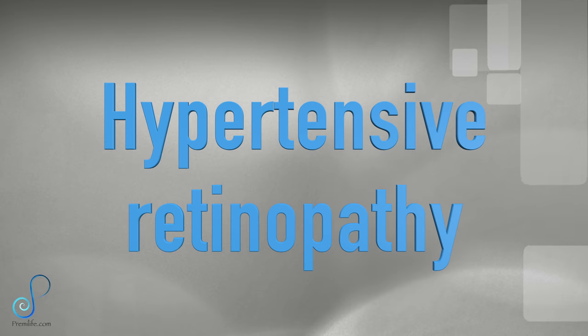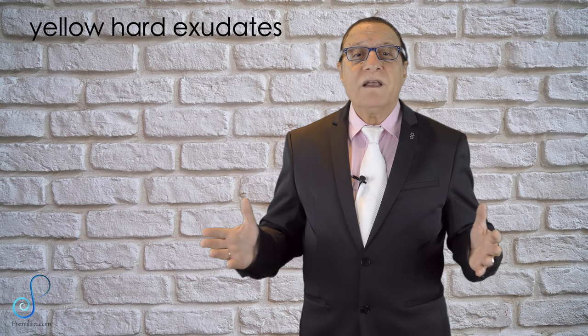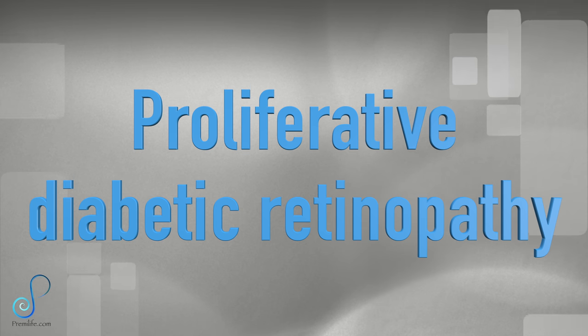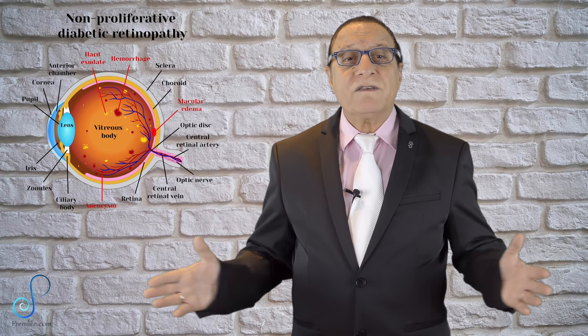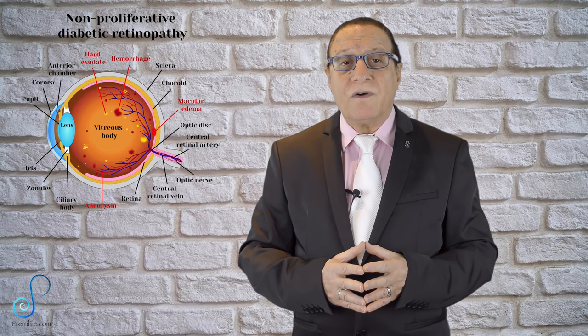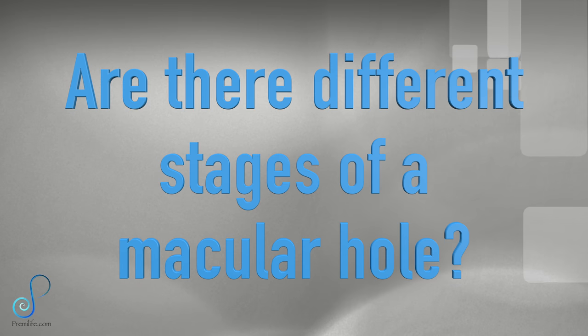Hypertensive retinopathy involves retinal vascular damage triggered by hypertension. Symptoms normally show late in the disease. Fundoscopic examination reveals arteriolar constriction, vascular wall changes, arteriovenous nicking, cotton wool spots, yellow hard exudates, flame-shaped hemorrhages, and optic disc edema. Proliferative diabetic retinopathy (PDR) is a more advanced form of the disease. At this point, new weak blood vessels grow in the retina and into the vitreous — the gel-like fluid filling the back of the eye. These new blood vessels may leak blood into the vitreous, clouding the vision.